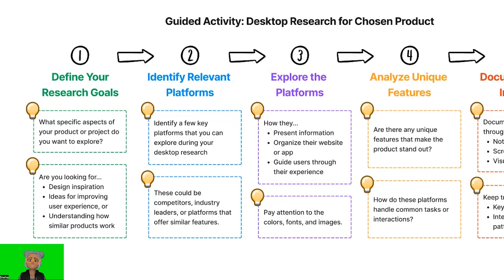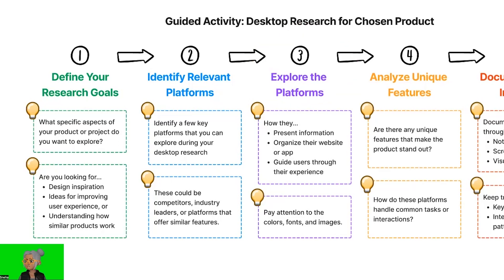Step 3: Explore the platforms. Once you have your list of platforms, start exploring them to learn more about their products or services. Take note of how they present information, organize their website or app, and guide users through their experience. Pay attention to visual design elements such as colors, fonts, and images.